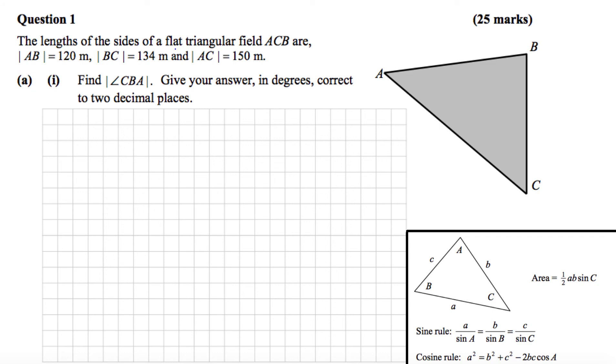So this is the 2014 Leaving Cert Higher Level Paper 2 and we're looking at question number one. The lengths of the sides of a flat triangular field ACB are AB which is 120, BC is 134 and AC is 150.